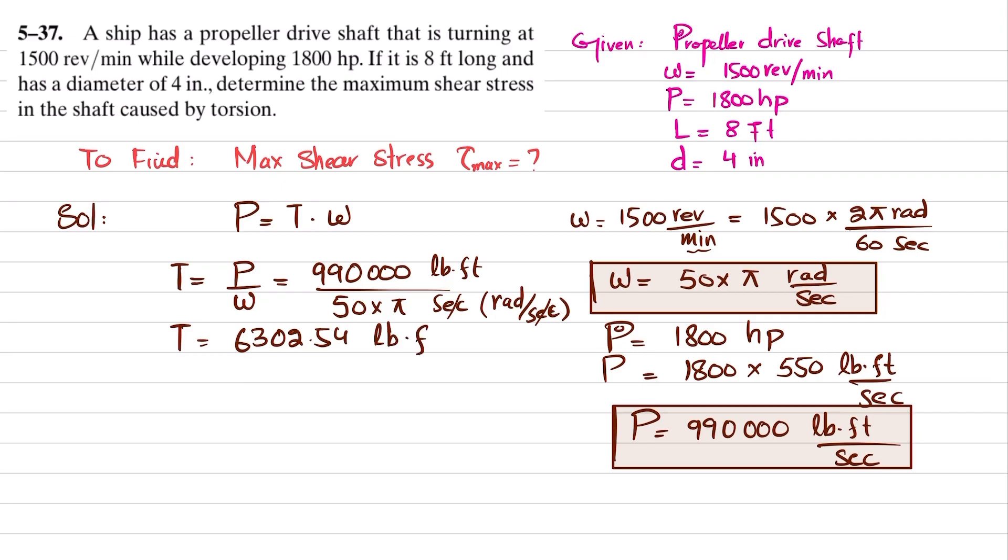To convert it into pounds-inches, T equals 6302.54 multiplied by 12, and now the unit will be pounds-inches.